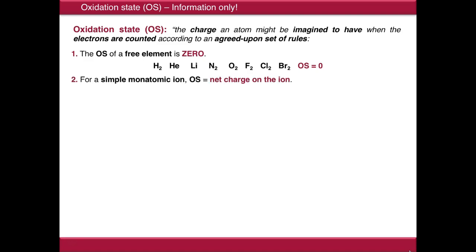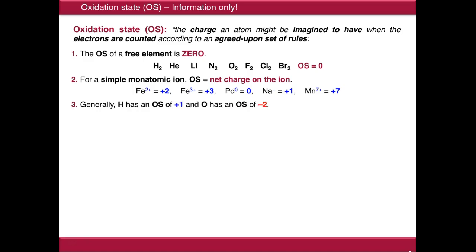For a simple monatomic ion, the oxidation state is equal to the net charge on the ion. So iron two plus has an oxidation state of plus two, iron three plus has an oxidation state of plus three, palladium zero is zero, and so on. Generally hydrogen has an oxidation state of plus one, and oxygen has an oxidation state of minus two.